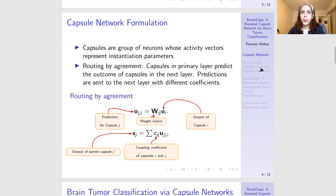Basically, a capsule is a group of neurons that represents the instantiation parameters of a specific instance in a specific location. Through the routing by agreement process, each capsule in a lower layer tries to predict the output of the capsule in the next layer, or the parent capsule. However, these predictions are not treated equally, which means that the parent capsule gives scores to predictions based on how successful they have been in predicting the actual output. The predictions are made through a weight matrix WIJ, which is learned through backpropagation, just like a normal deep learning network. These predictions are then scored using a coefficient CIJ, which is obtained based on the similarity between UJI and the actual output of the parent capsule, which we refer to as SJ.